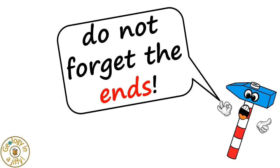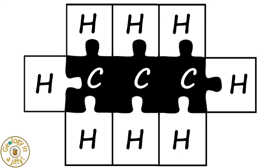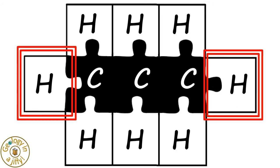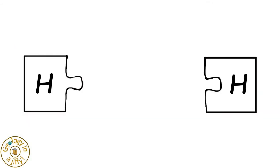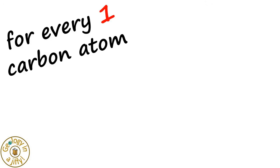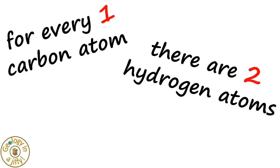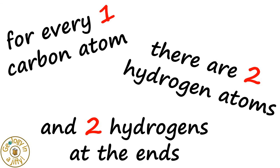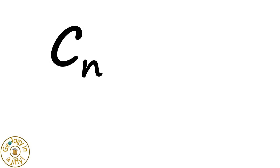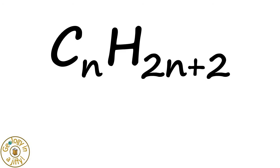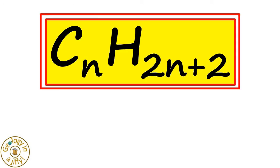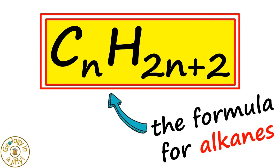But do not forget the ends of the molecule. We have one hydrogen at each end of the molecule, giving us two more hydrogens to add on. So for every one carbon atom, there are two hydrogen atoms, and two hydrogens at the end. This is a formula, so we highlight it because it is important, as it is the formula to work out the number of atoms in an alkane.